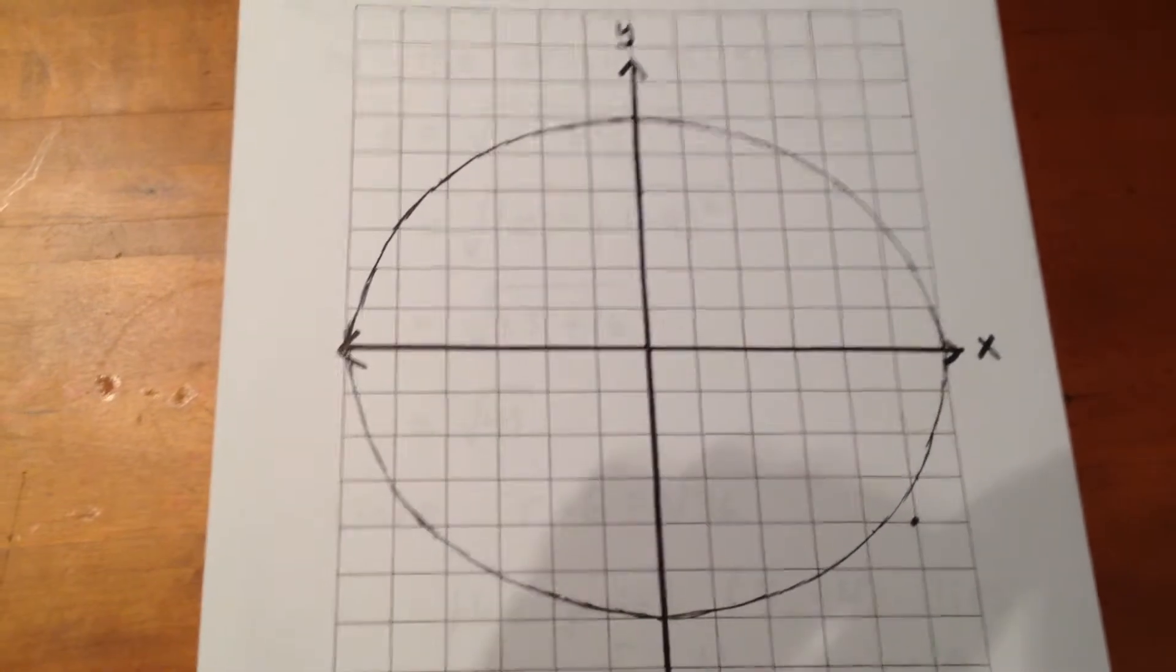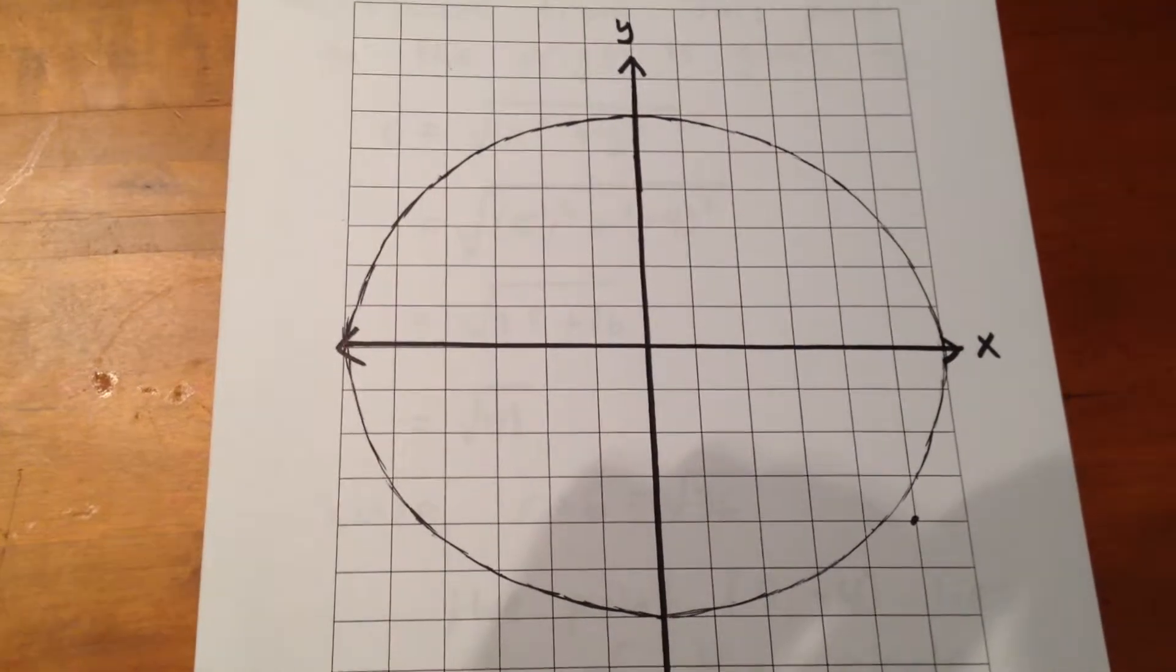How could we show that algebraically, though, to be a little bit more precise and definite with our response?